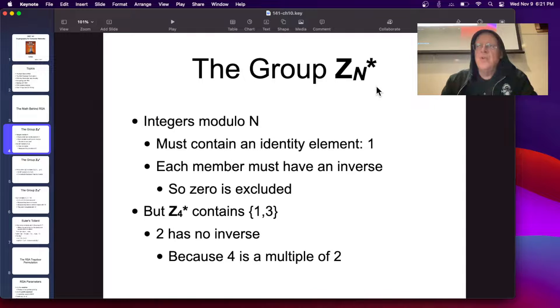So you have to understand a group. A group ZN star. This is the group, which is all the integers modulo N. Now, in order to be a group, it has to have an identity element 1, and every member has to have an inverse. So you can't include 0 because 0 times something would be 0, and there's no way to reverse that.